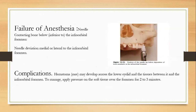Failures occur if the needle contacts bone below the infraorbital foramen, or if the needle deviates medial or lateral to the foramen. Complications include hematoma across the lower eyelid and surrounding tissues. To manage, apply pressure on the soft tissue over the foramen for 2-3 minutes.